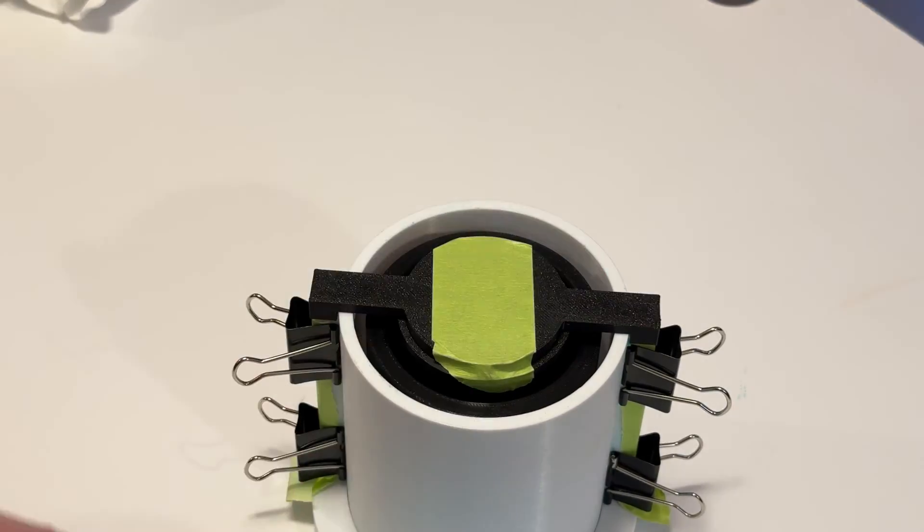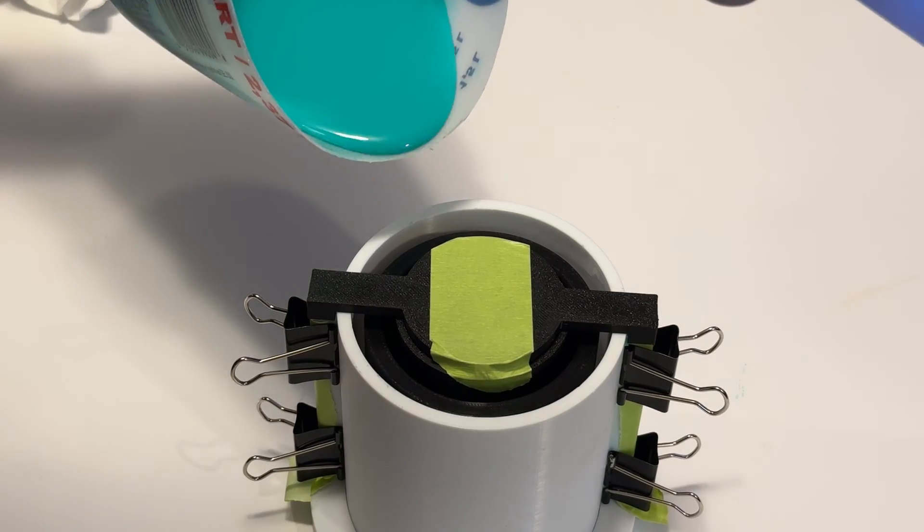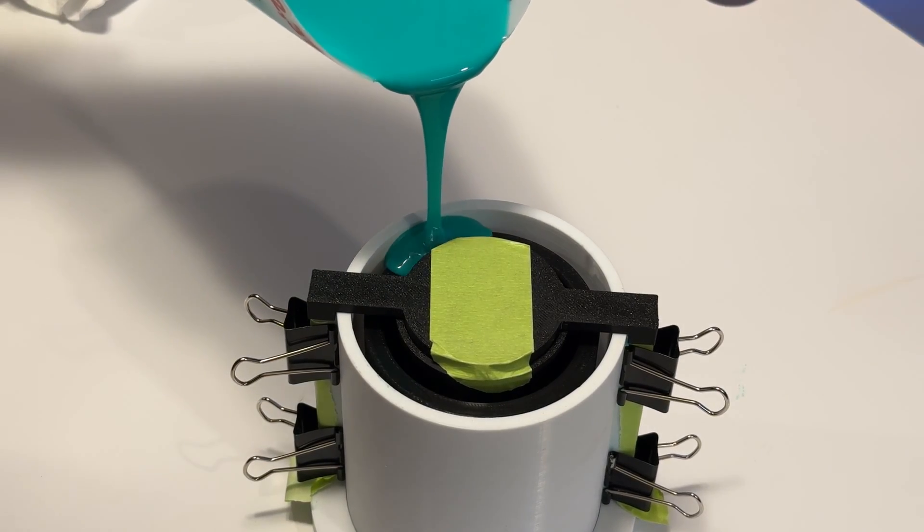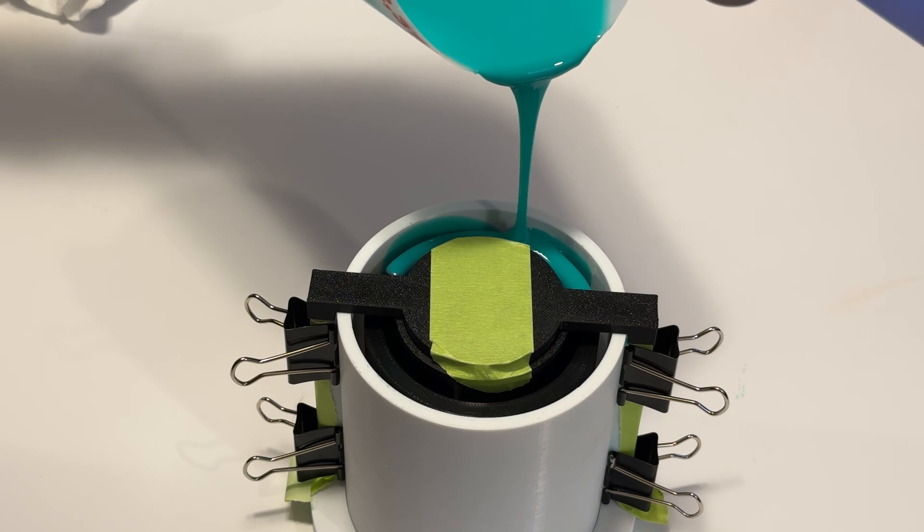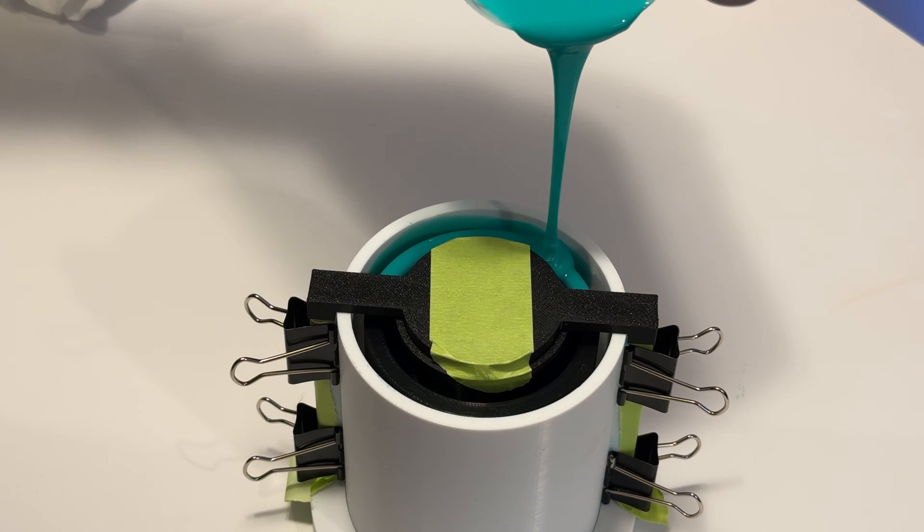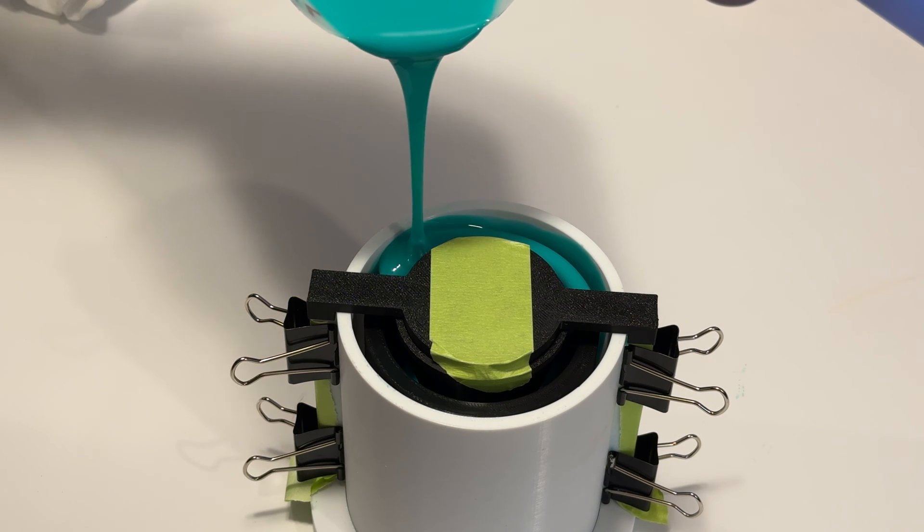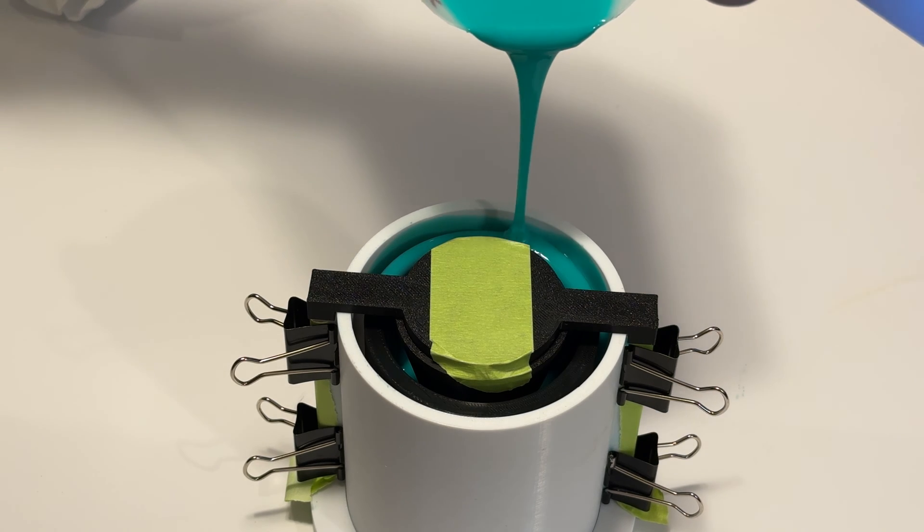And here's the mold ready to be poured. I did put some tape on there to hold that TPU piece up so it doesn't fall to the bottom. And then when you're pouring silicone, everything I've learned is the higher you pour, the better. It's called the waterfall method, I think, with the intent of getting rid of whatever bubbles or air might still be in the silicone.